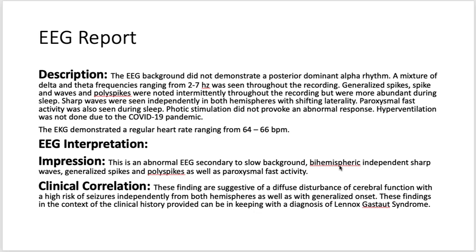So how do you report this EEG? You need to start with the clinical history. You need a description — in this case, the EEG background did not demonstrate a posterior dominant alpha rhythm. A mixture of delta and theta frequencies ranging from 2 to 7 Hz was seen throughout the recording. Generalized spikes, spike-and-wave, and poly spikes were noted intermittently throughout the recording but were more abundant during sleep. Sharp waves were seen independently in both hemispheres with shifting laterality. Paroxysmal fast activity was also seen during sleep.